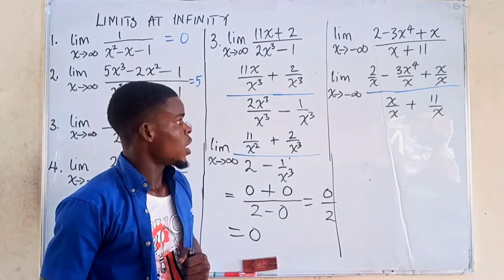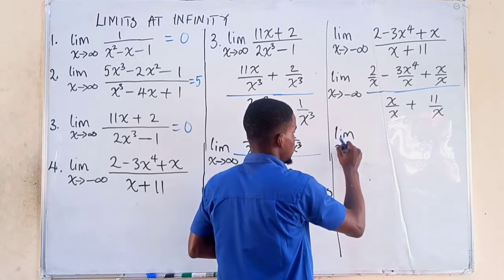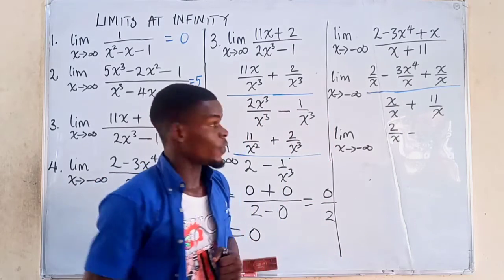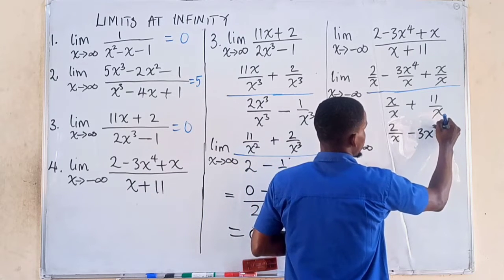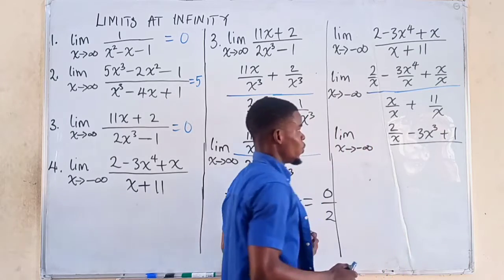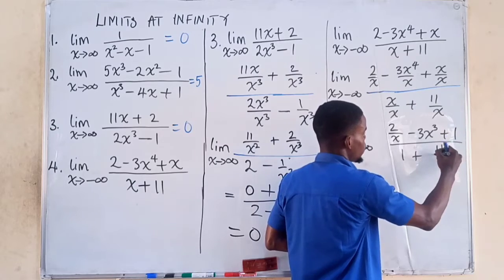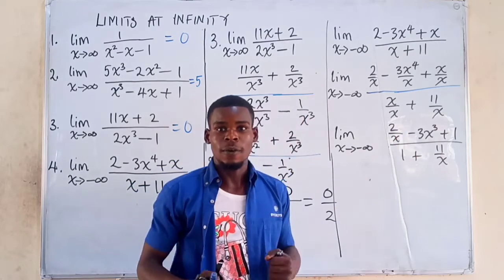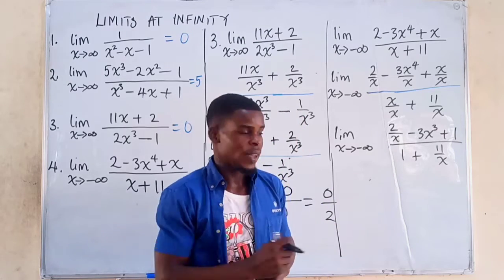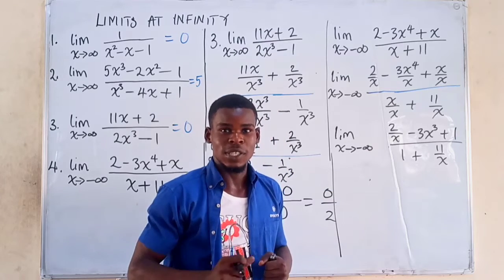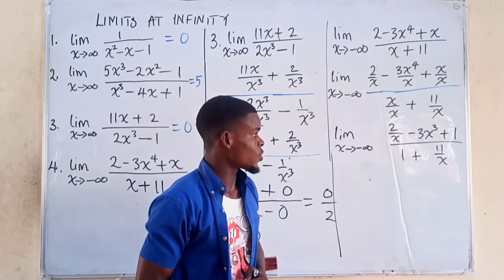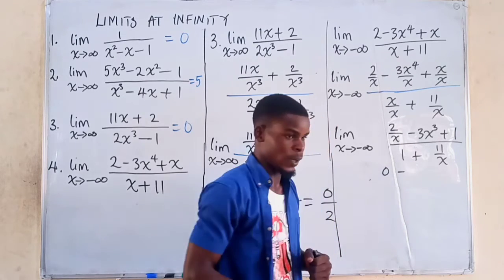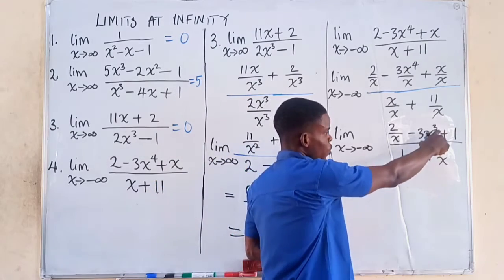After cancellations in the numerator, we have the limit as x goes to negative infinity of 2 over x minus 3x cubed plus 1, divided by 1 plus 11 over x. As x tends to negative infinity, 2 over x approaches 0 because the denominator is growing toward negative infinity — 2 over negative infinity equals 0.